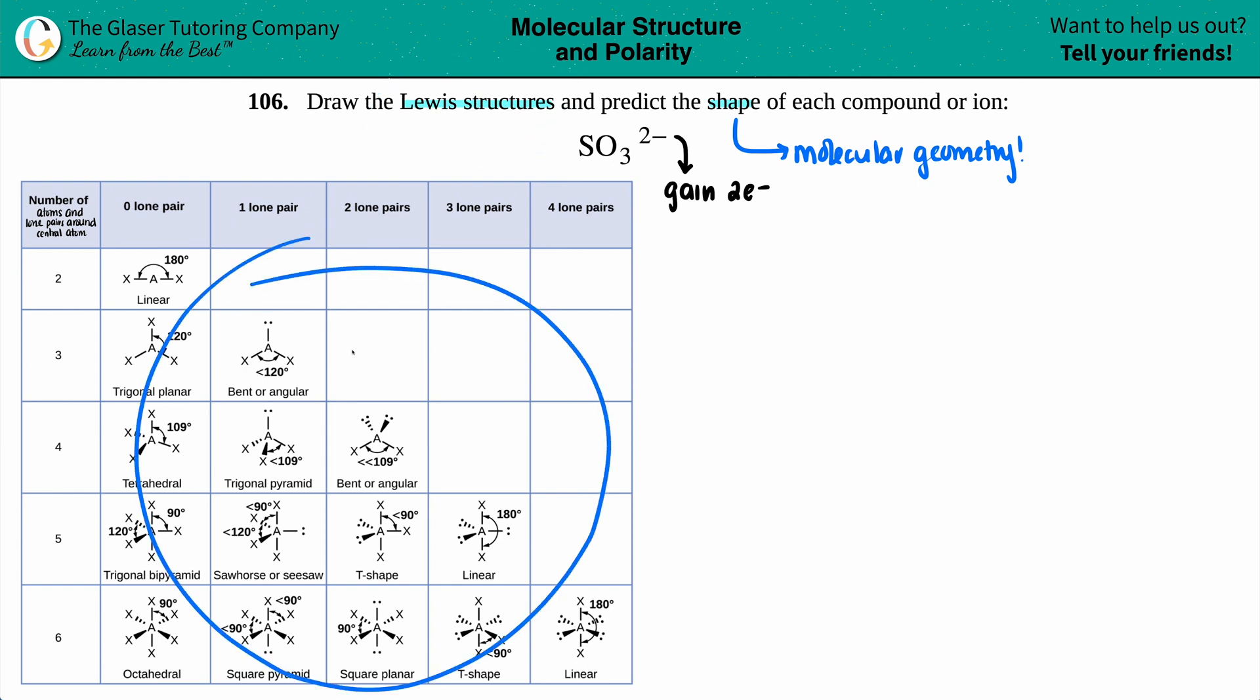So before we use this chart, which is all your molecular geometries, let's draw the Lewis structure. Now, in order to start drawing a Lewis structure, the least electronegative element always goes in the middle as the central atom. So between sulfur and oxygen, they are both in the same group, and as you go down a group, your electronegativity will decrease. So that means sulfur is a little bit less electronegative than oxygen, so sulfur in the middle surrounded by the three oxygens—maybe we'll do one, two, and three.